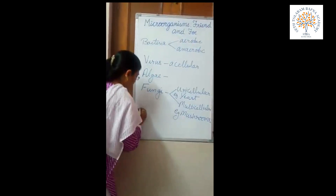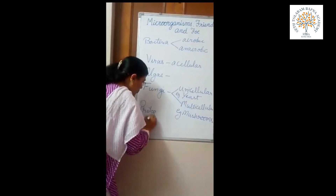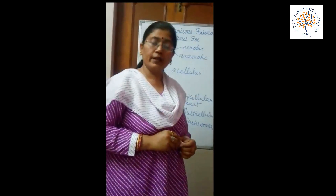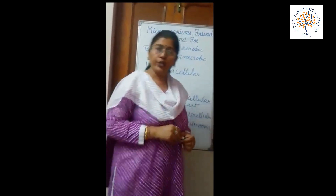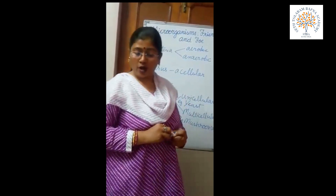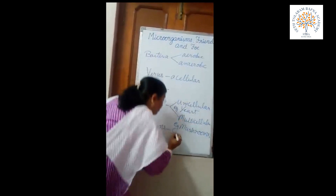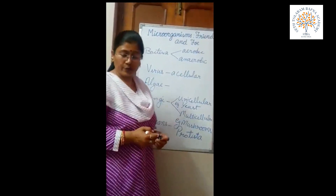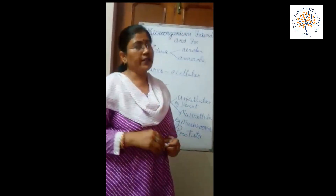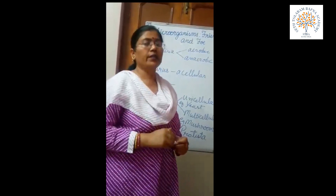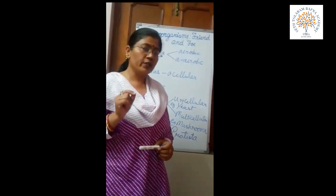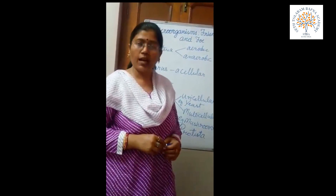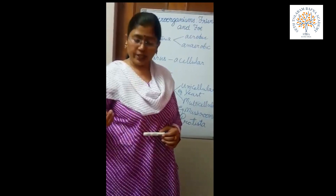The next category is protozoans. Protozoans are the first animal-like organisms, and they are unicellular microorganisms. They belong to a separate kingdom called Protista. They can be saprophytic or parasitic. One exceptional case is euglena, which contains chlorophyll and can prepare food by itself. Other examples of protozoans include amoeba and paramecium.